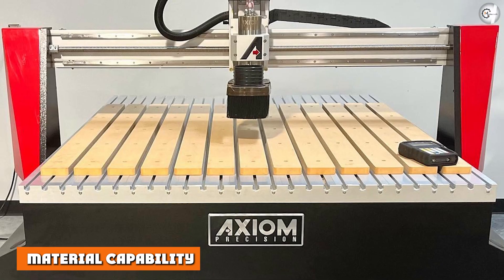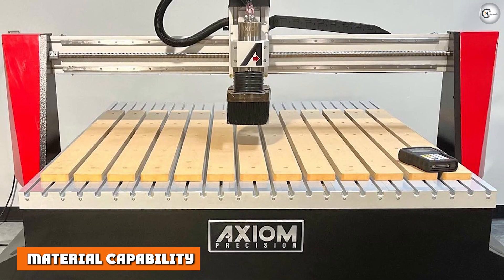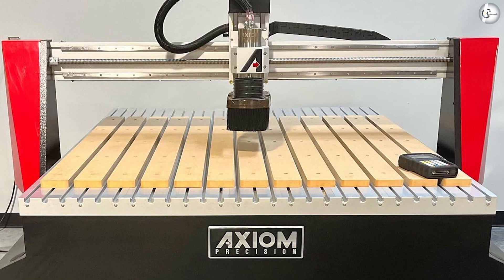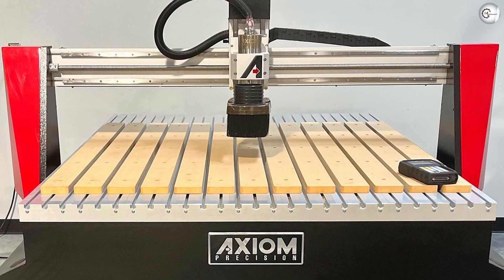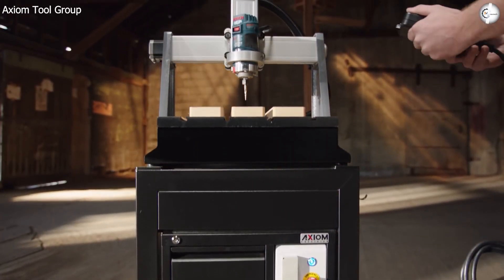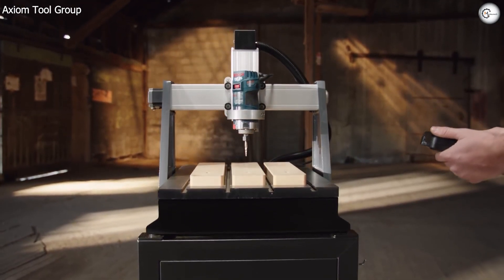Material capability. You can cut a wide variety of materials with this CNC machine like wood, plastics, phenolic, foam, composites, aluminum, and brass. It can cut through steel at a shallow depth of cut with proper lubrication.